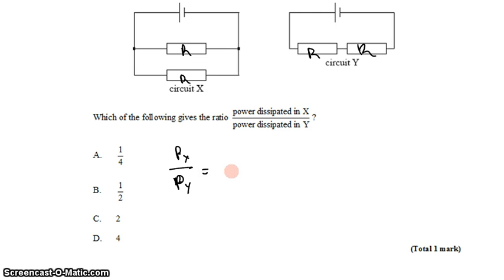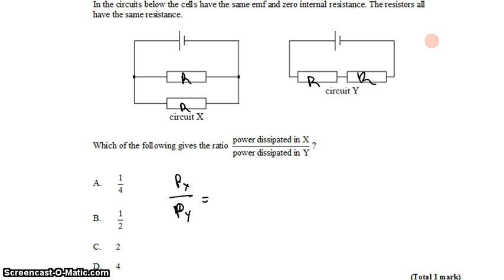Power can be computed in a number of different ways: voltage times current, current squared times R, voltage squared divided by resistance. But let's take a look at what we know. We know they have the same voltage V, and we know a lot about the resistances, so the wise choice would probably be V squared over R for power.